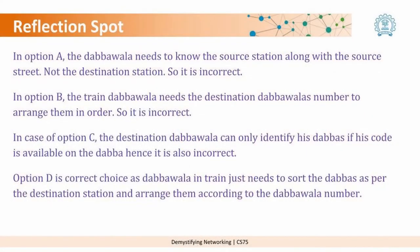Some of you might have picked option A, but the Dabawalas at source need to know the source station along with the source code, not the destination station, so option A is incorrect. For option B, the Dabawalas in the train need to know the Dabawala number of the destination station to arrange the Dabbas in that category. For option C, the destination Dabawala can identify his Dabbas only if his code is present on them, so option C is also incorrect. Finally, option D is correct: the Dabawalas in the train require the destination train station and the destination Dabawala number who will collect the Dabbas.